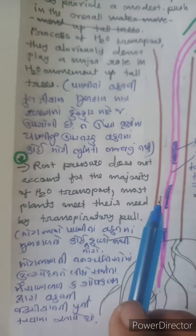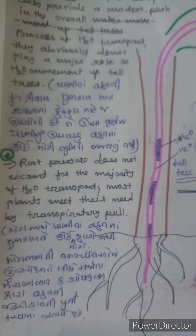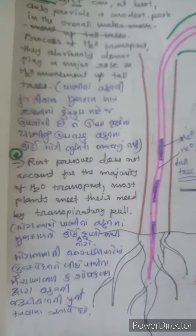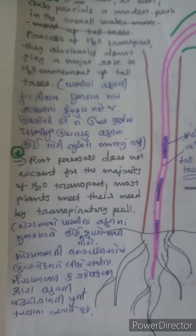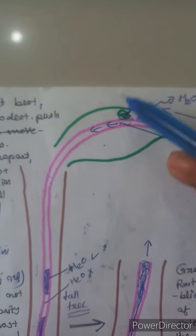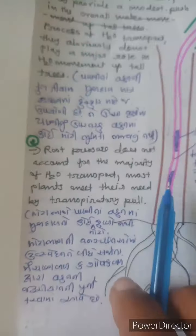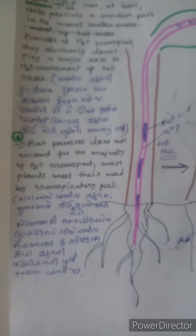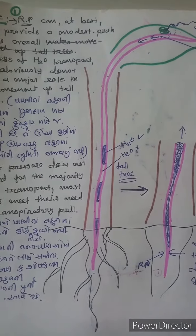Most plants meet their water transport needs by transpiration pull. Transpiration creates suction and tension that pulls water upward. This pulling force from transpiration is the main mechanism responsible for water transport in plants, not root pressure.